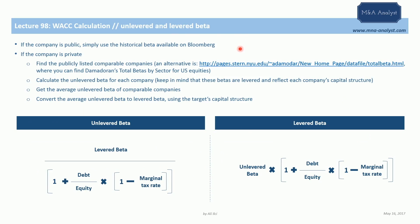Which beta to use? If the target company is public, we can get the historical beta directly from Bloomberg — it's quite straightforward. This will be a levered beta, so you can use it directly. However, if the target company is private, we have to find the beta of publicly listed comparable companies. But these figures are levered, meaning each reflects the capital structure of the related comparable company. So first we calculate the unlevered beta for each company, then take the average unlevered beta of the comparable companies.